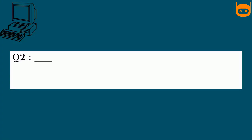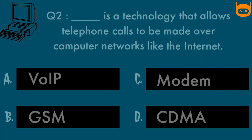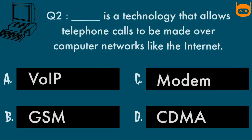Our second question is: DASH is a technology that allows telephone calls to be made over computer networks like the internet. Your options are: Option A, Option B, Option C, Option D — CDMA. Your time starts now.